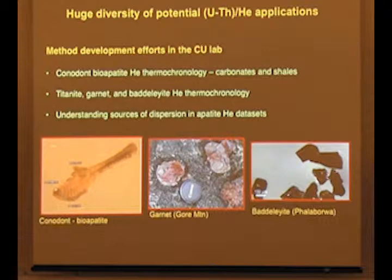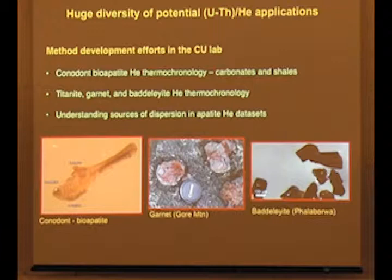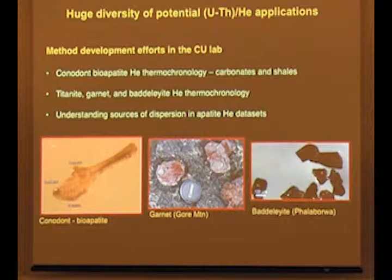I'm going to highlight a few examples of things we're doing in the lab at CU. Typically, my students work on some aspect of method development or methodological testing along with application to a geological problem. Specifically, we're working on conodont bioapatite helium thermochronology. Conodonts are phosphate microfossils common in Paleozoic and early Mesozoic carbonates and shales. Currently, there are no thermochronometers that you can use in these units, and carbonates and shales cover wide sections of continental interiors and large portions of sedimentary basins. Successfully developing this as a thermochronometer would provide a very powerful new tool.